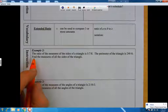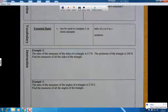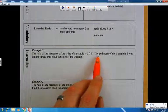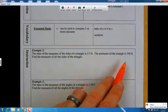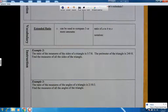Let's take a look at example two. It says that the ratio of the measures of the sides of a triangle are 5 to 7 to 8. Right there, that is a ratio, and it says that the perimeter of a triangle is 240 feet, and they want us to find the measures of all the sides of a triangle.